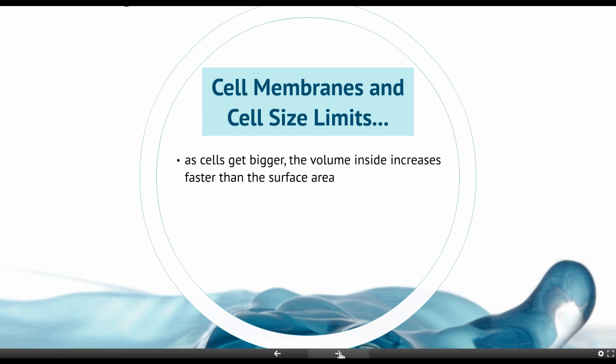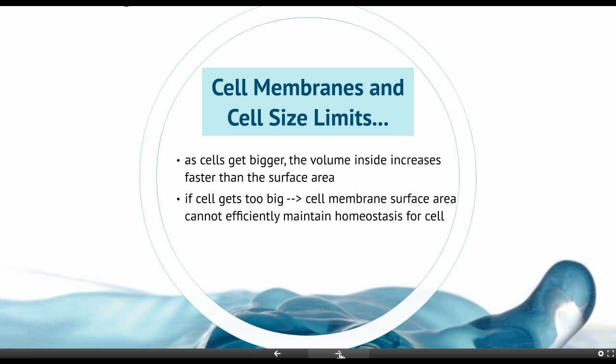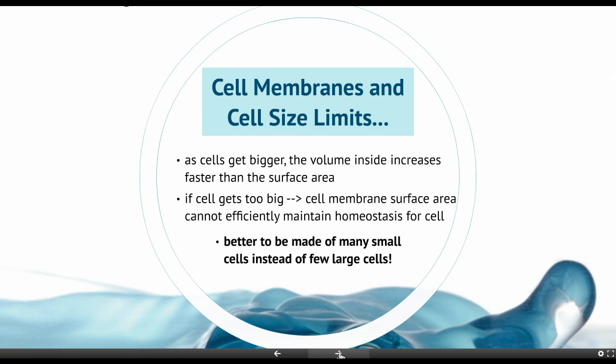As a cell gets bigger, the volume inside increases much faster than the surface area. And as a result, if the cell gets too big, the cell membrane surface area just can't efficiently help that cell maintain homeostasis. What this leads to is if you're going to be the size of a human being, it's better to be made of many, many small cells instead of a few large cells. Organisms that are single-celled are all microscopic because you just can't efficiently maintain homeostasis with a single cell membrane of a very, very large cell.